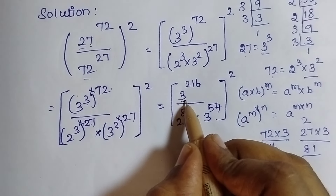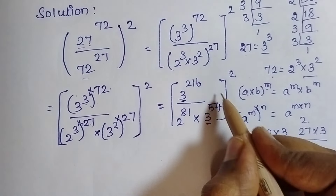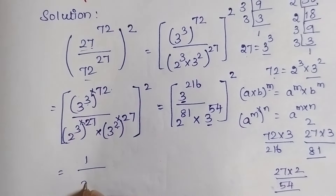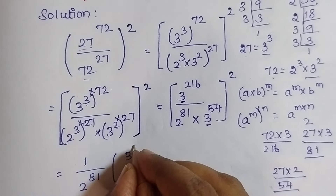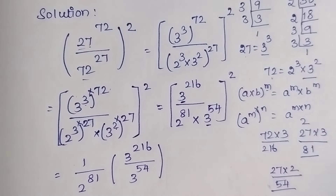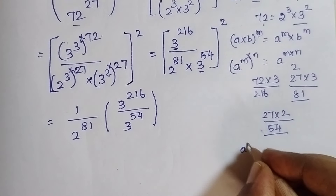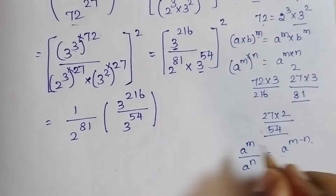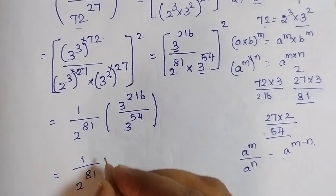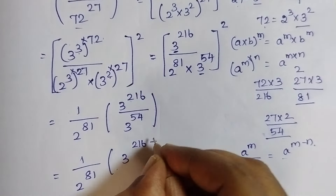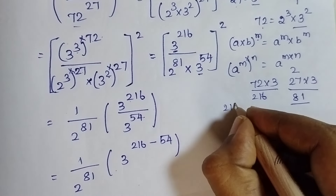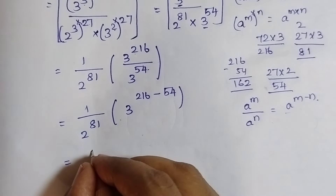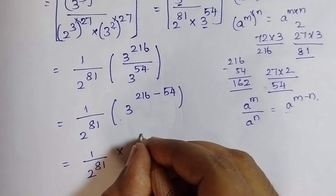Now, looking at the expression, the base 3 appears in both numerator and denominator. So I'll group the base-3 terms together and keep 1 divided by 2 power 81 separately. This gives: 1 divided by 2 power 81, times 3 power 216 divided by 3 power 54. Using the rule A power M divided by A power N equals A power M minus N, this becomes: 1 divided by 2 power 81, times 3 power 216 minus 54. Since 216 minus 54 equals 162, we get 1 divided by 2 power 81, times 3 power 162.